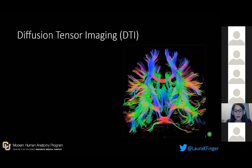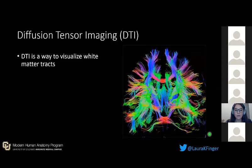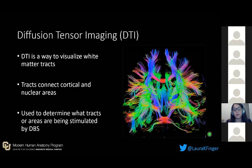To attempt to fill that gap, I used diffusion tensor imaging, or DTI, as a way to visualize white matter tracts in the brain. Tracts connect cortical and nuclear areas, and we can use it to see what areas in the brain are being stimulated with DBS.